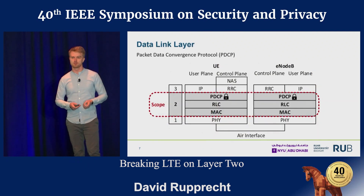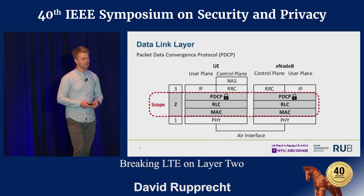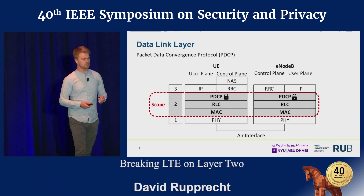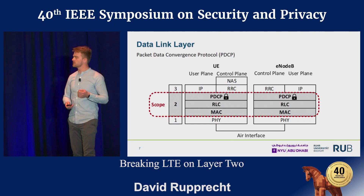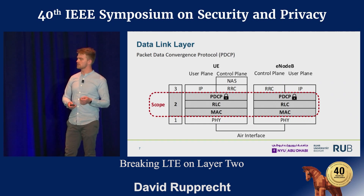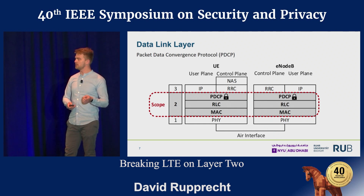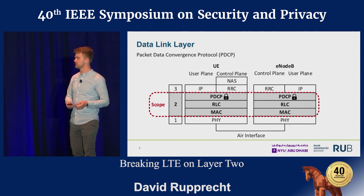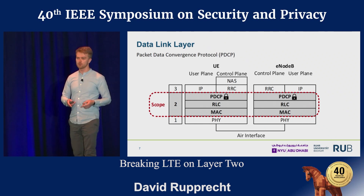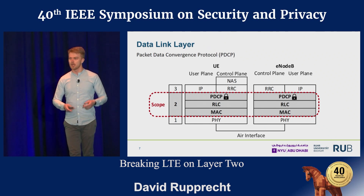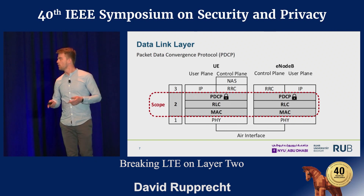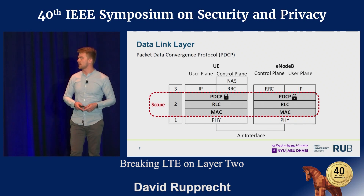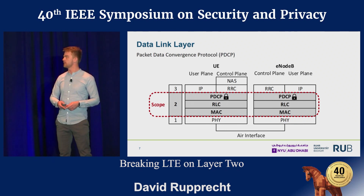This brings me to layer two of LTE, the data link layer, where security is implemented for the radio layer connection. In particular, the PDCP sub-protocol implements the security here. We need to know that there are no security measures below this layer, and we want to understand what kind of security measures are implemented at the PDCP.